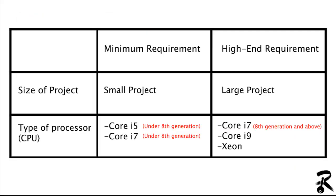I recommend for a user with a small project — like a small building or a small park — to go for a Core i5 or i7 under the 8th generation. For a big project, like a tower with interiors and details, or an airport or stadium, you can go for an i7 8th generation and above, Core i9, or Xeon.